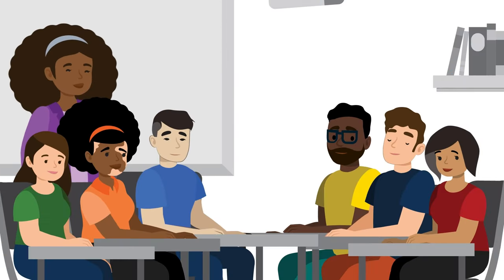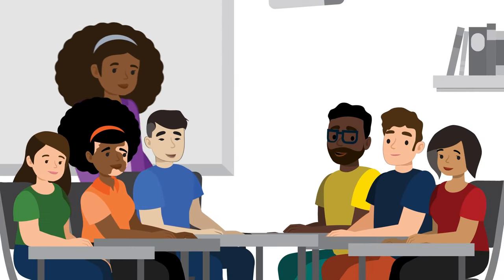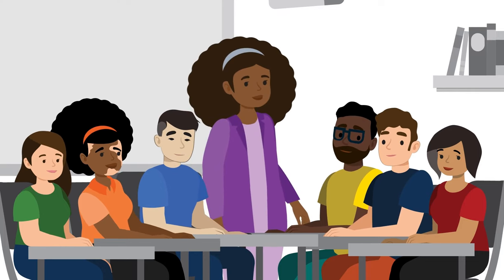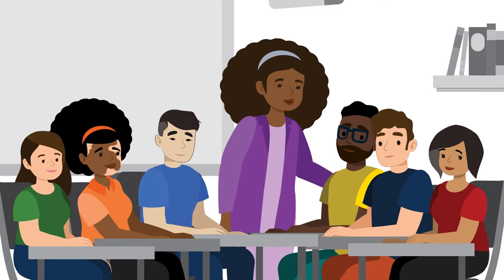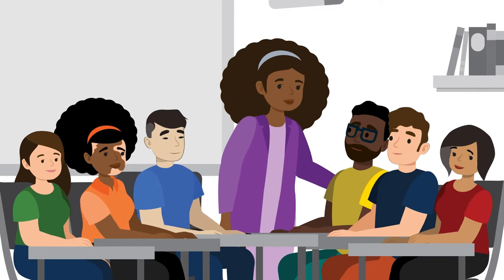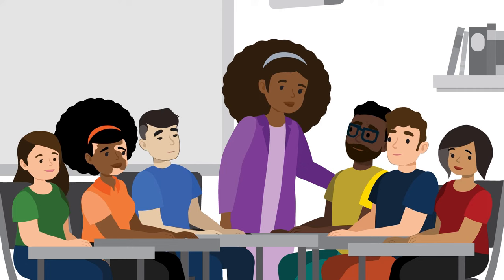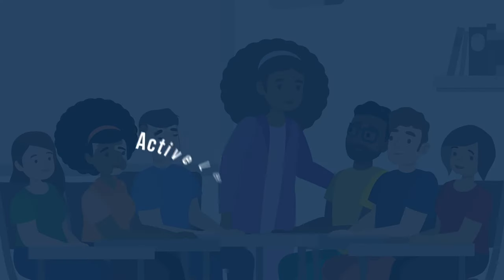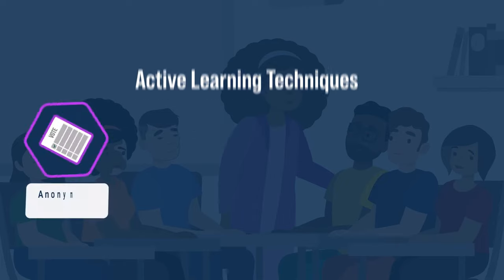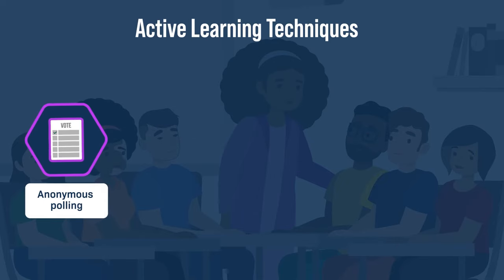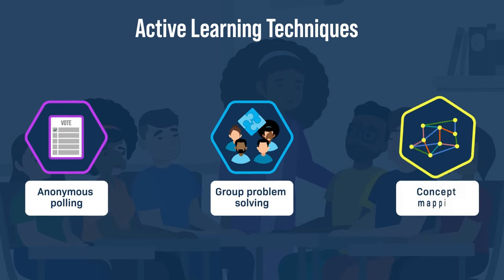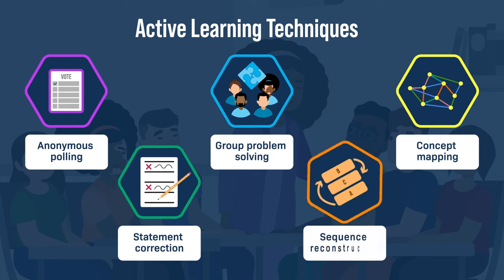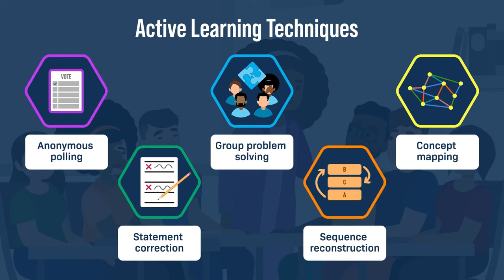Active learning also helps provide all students with the opportunity to construct their knowledge of the course content, which is another characteristic of an inclusive classroom. When using active learning, teachers take on the role of facilitators, presenting students with challenging problems and coaching them to apply the skills and concepts taught in the class to solve them. You can use active learning techniques like anonymous polling, group problem solving, concept mapping, statement corrections, and sequence reconstructions.